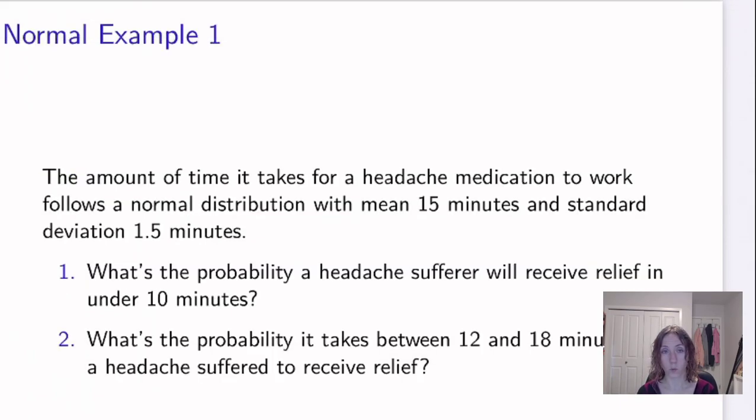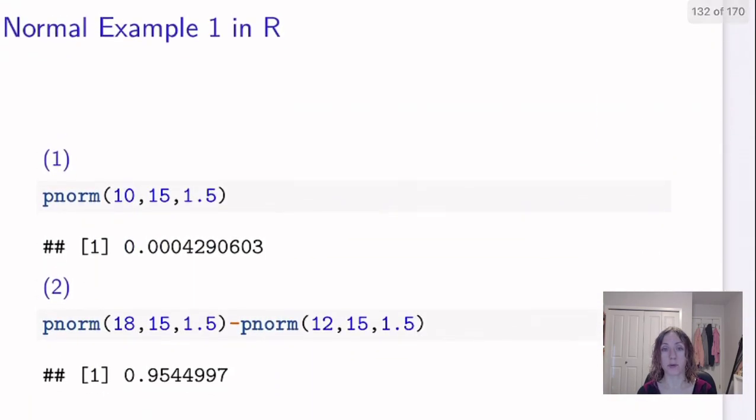Now, we can also do this with general normal probabilities, as I alluded to, by using our X and our actual mu and sigma. So we looked at this problem in the notes. So the amount of time it takes for a headache medication to work follows a normal distribution with mean 15 minutes and standard deviation 1.5 minutes. So part one, what's the probability a headache sufferer will receive relief in under 10 minutes? So under 10 minutes means less than 10. So I want to know my probability being less than 10 in the distribution with mu 15 and standard deviation 1.5. So if I wanted to go and do this in R, I would take my pnorm function, because that's area to the left, of what I want it to the left of the number 10 for a distribution with mean of 15 and a standard deviation of 1.5. And that will give us the same answer as what we did when we were doing this the long way by hand. So we can use pnorm directly on general, our general normal probabilities.